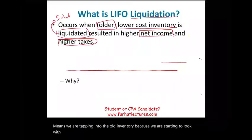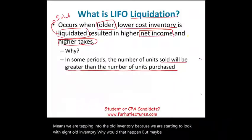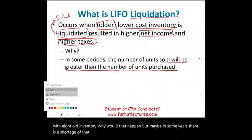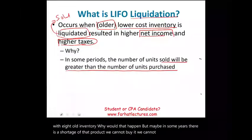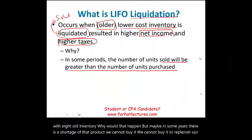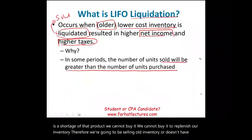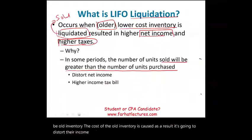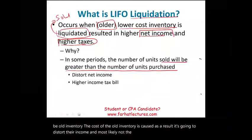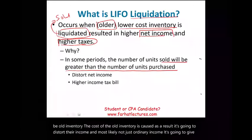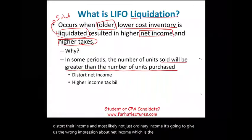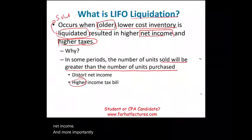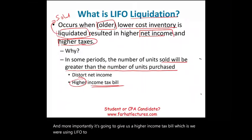Why would that happen? Maybe in some years there is a shortage of that product and we cannot replenish our inventory. Therefore, we're going to be selling old inventory at old cost. As a result, it's going to distort net income — give us the wrong impression about net income — and more importantly, it's going to give us a higher income tax bill, which is exactly what we were using LIFO to avoid in the first place.